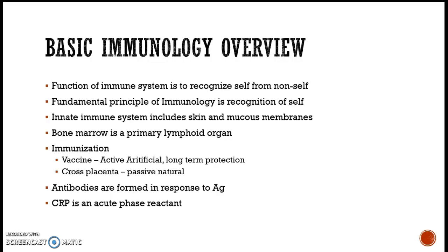Starting with a basic immunology overview: the function of the immune system is to recognize self from non-self and defend from non-self. We are all born with an innate immune system, which includes our skin and mucous membranes. Over time our adaptive immune system comes into play and T cells and B cells start to develop a memory. Know that bone marrow is a primary lymphoid organ, and lymph nodes, thymus, and spleen are secondary lymphoid organs. Understand natural passive and artificial active immunity — the vaccine is an active artificial form providing long-term protection, and when something crosses the placenta that refers to passive natural.